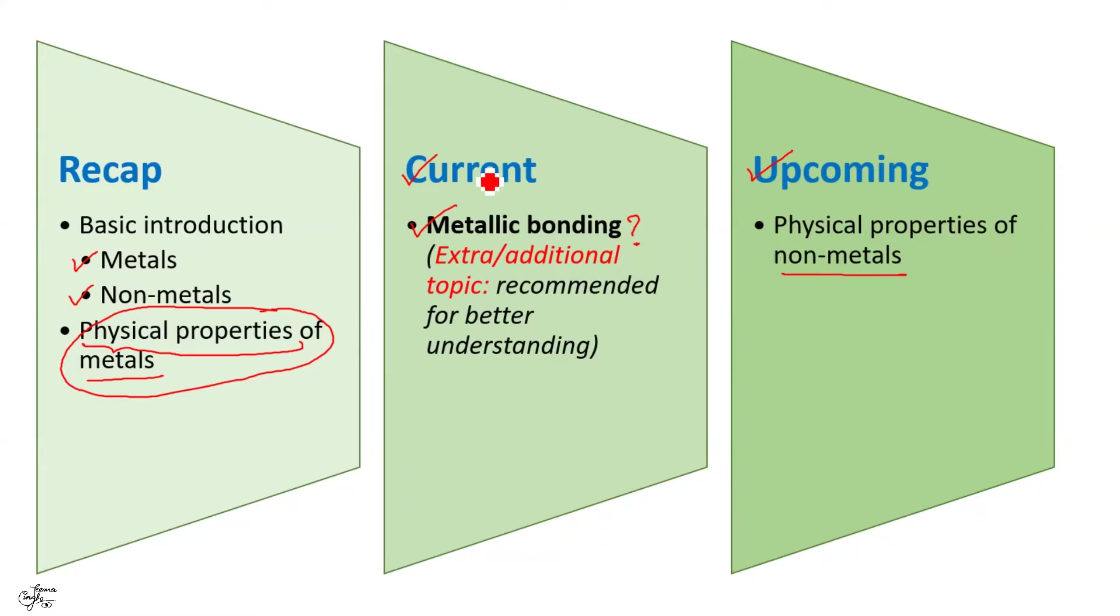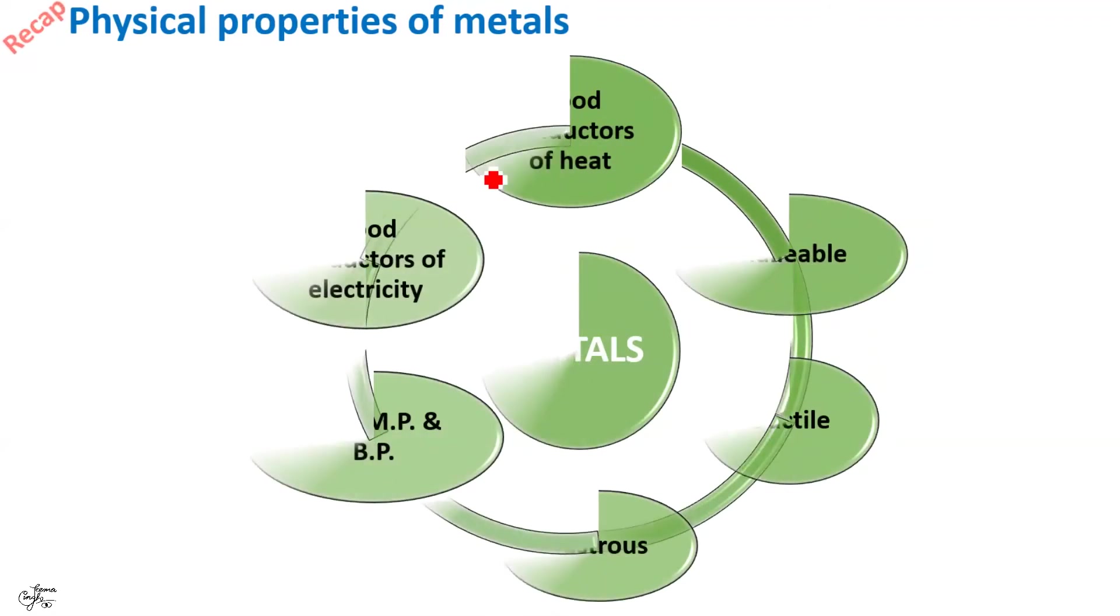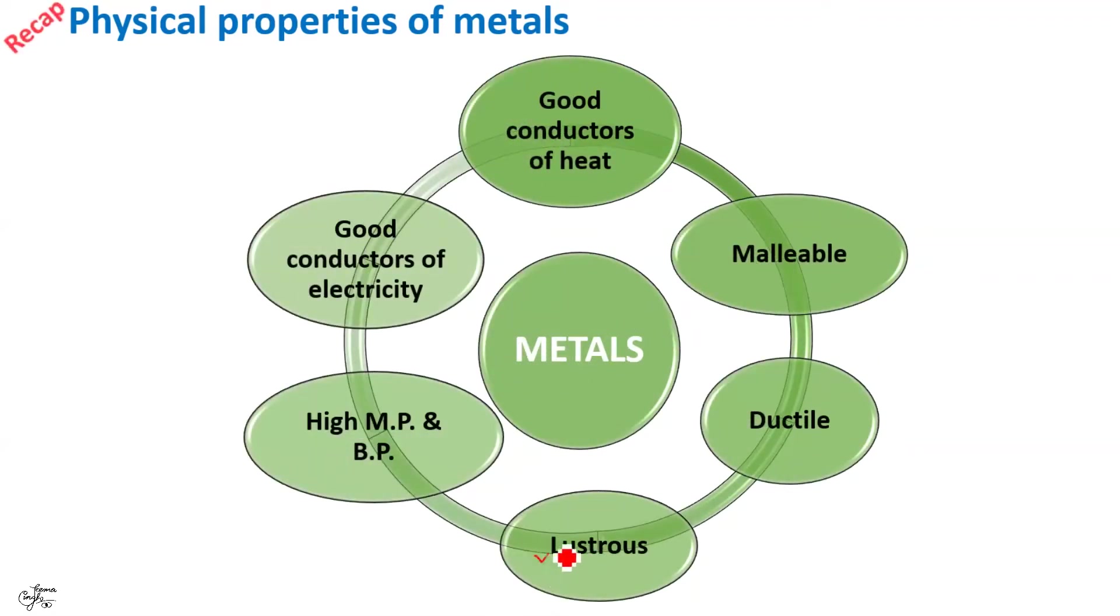Let us begin by quickly recalling the various physical properties of metals which can be explained by metallic bonding. Metals are lustrous, that means they have shining surface. They are malleable which means they can be beaten into thin sheets. They are ductile, they can be drawn or stretched into wires. They have high melting and boiling points and are good conductors of both heat and electricity. For details, you can always refer to my previous video whose link is provided on the top as well as in the description box below.